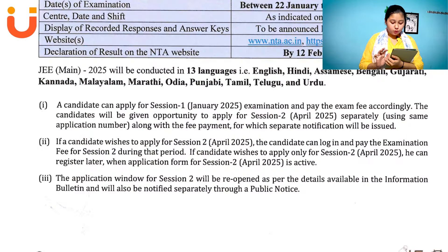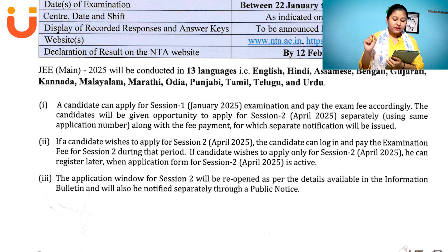If you want to attempt both sessions, you need to fill the form separately for Session 1 and separately for Session 2. If a candidate wishes to apply only for Session 2 April 2025, they can register later when the application form for Session 2 is active on the NTA website. NTA will publish a separate public notice for Session 2, just like they did for Session 1.